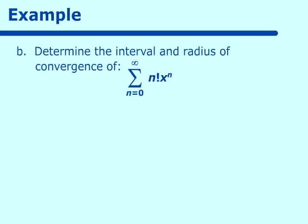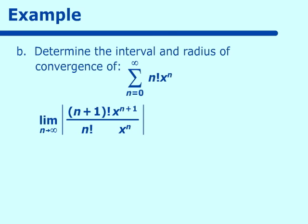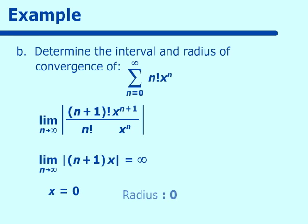Next example: determine the interval and radius of convergence of the series n! times x^n. Using the ratio test, we have (n+1)! x^(n+1) over n! x^n. Reducing, (n+1)! over n! gives (n+1), and x^(n+1) over x^n gives x. As n approaches infinity, this goes to infinity, which means there is only one point of convergence: x = 0. The radius of convergence is 0.